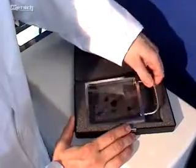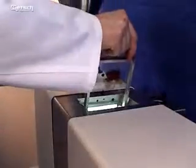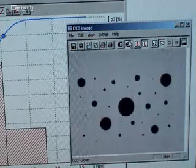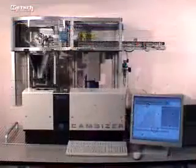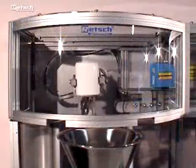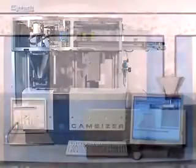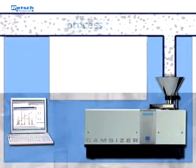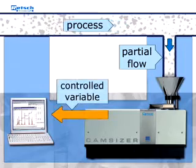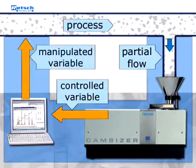Using a highly accurate and certified reference object, the Camsizer can be recalibrated and automatically adjusted within seconds at any time. The constantly increasing trend towards laboratory automation in particle size analysis can be realized by an auto-sampler system. Based on a kind of trend analysis, the process parameters can be optimized through a closed-loop control circuit.